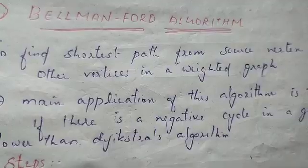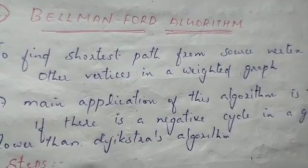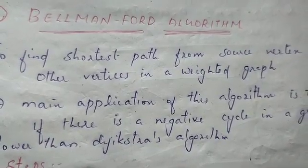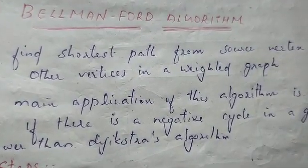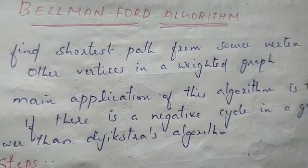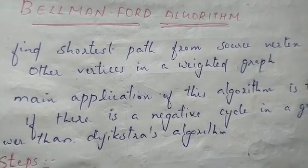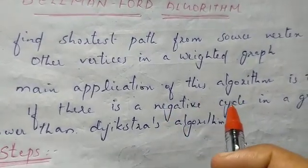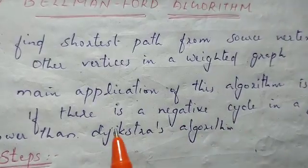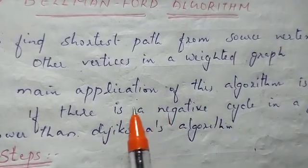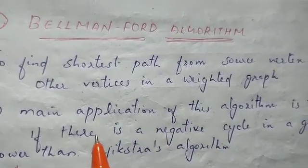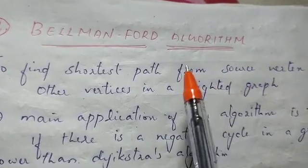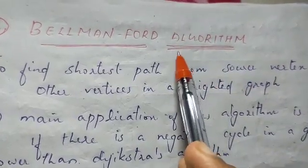Bellman-Ford can also solve the single source shortest path problem even if there is a negative cycle in the graph. Comparatively, Dijkstra's algorithm will be faster, because Bellman-Ford requires more iterations.